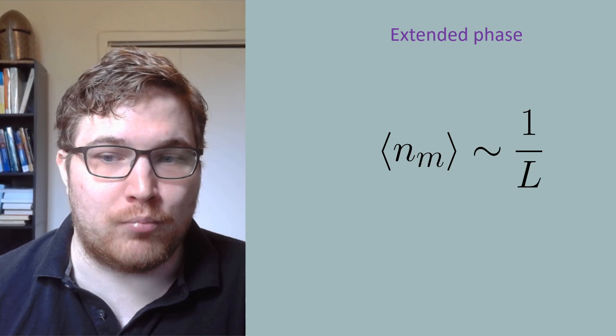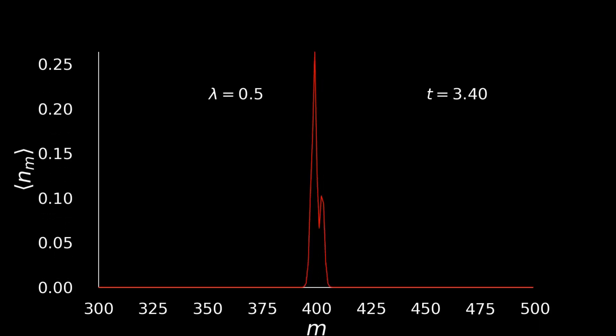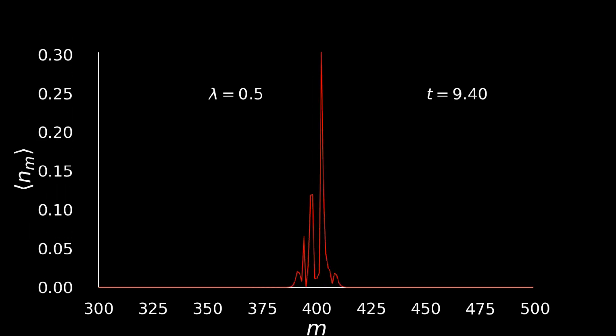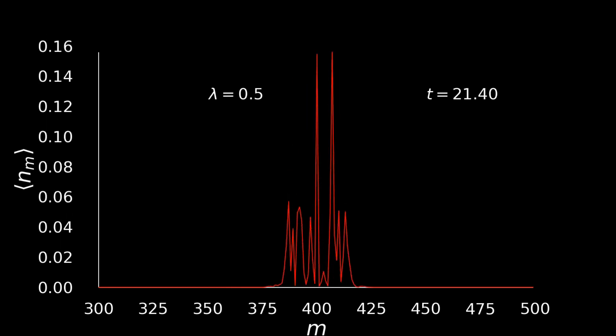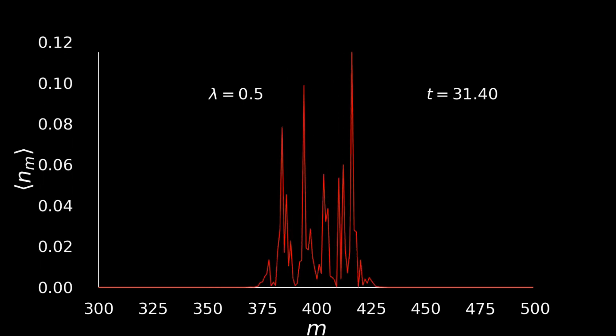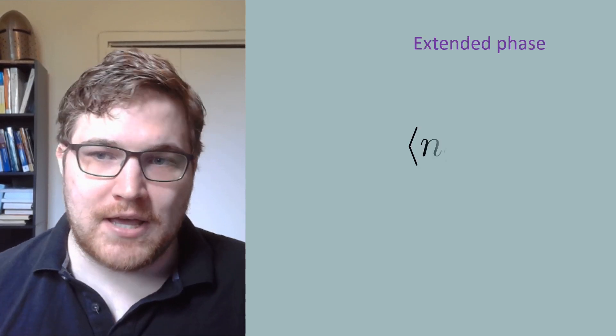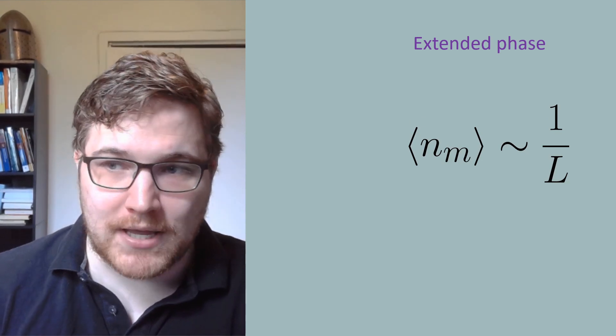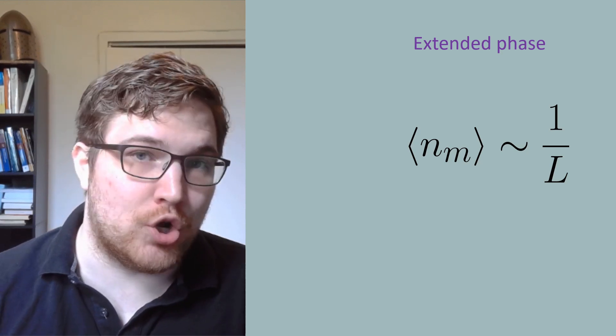At lambda equals 0.5, we see another extended phase. The electron is allowed to propagate through the system, although in this case it was a little bit slower than the no disorder case. So let's tune this up a bit and say that lambda equals 1.2.